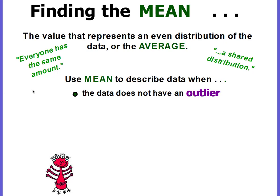A lot of times you come up to me and ask, 'What's my grade?' What you're really asking is what is the average of all of your math grades put together. This average is what goes on your progress reports and your report cards. The average represents a shared distribution — how much will each person get if everybody has the same amount. We use the mean to describe data when the data does not have an outlier.